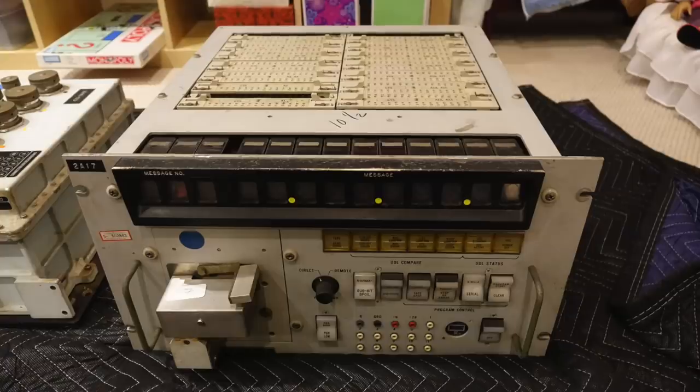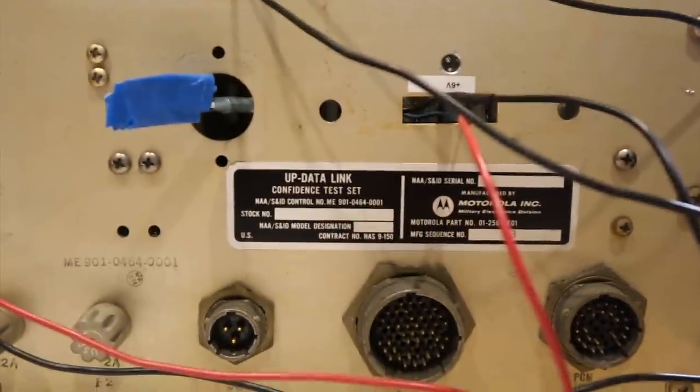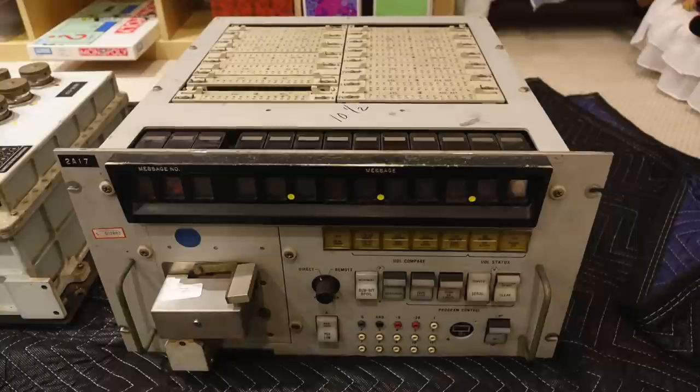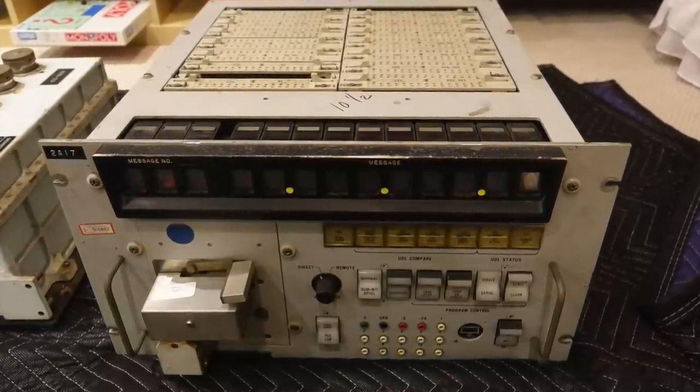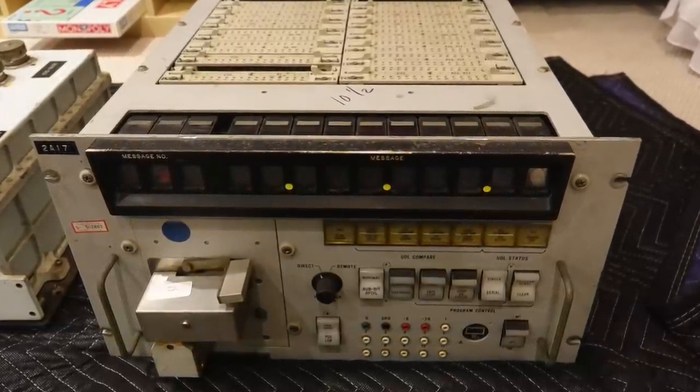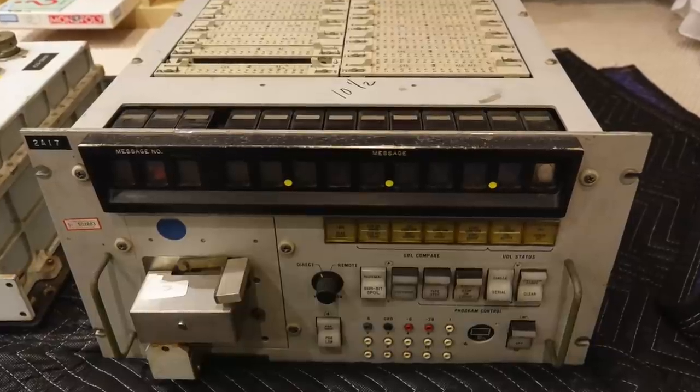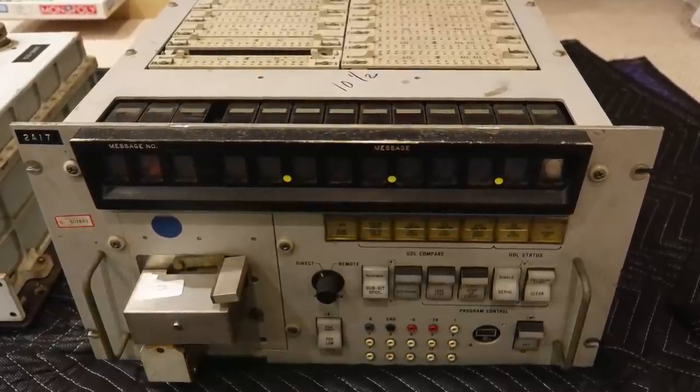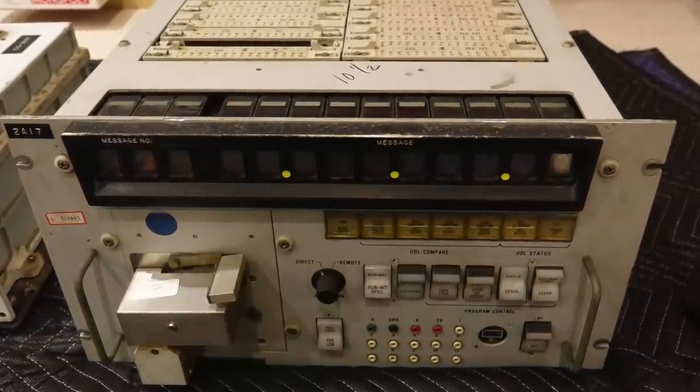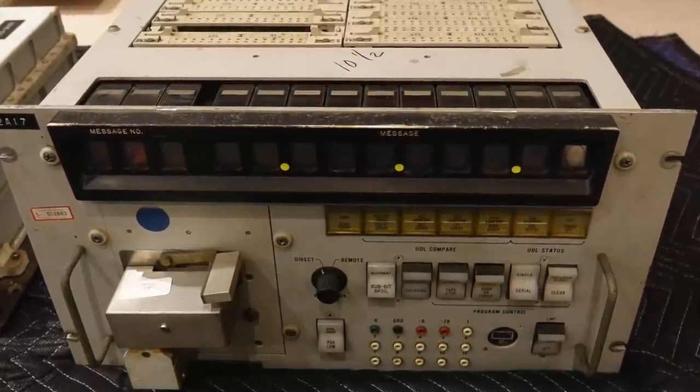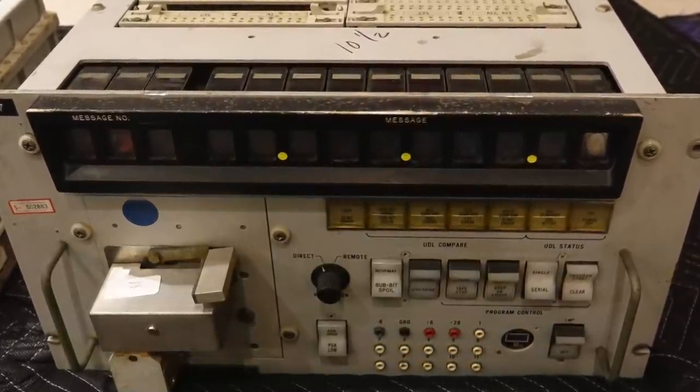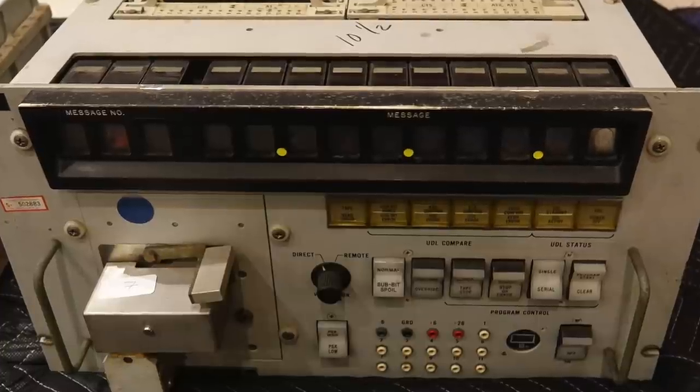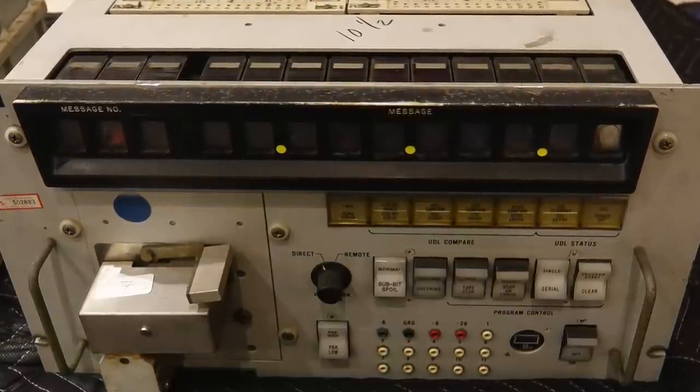However, we have an inkling of what it is. It says Updata Link on it. The command system to remote control the spacecraft and the guidance computer was called the Updata Link, or UDL, using phase shift keying modulation, or PSK. All the legends do match. So this is probably the box that tested sending coded commands to the spacecraft, and the command code would have been displayed in the front. What a save Marcel, what a save.